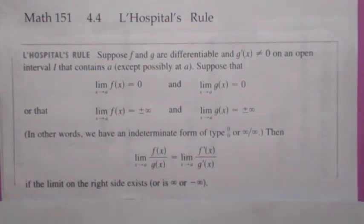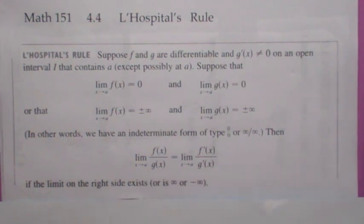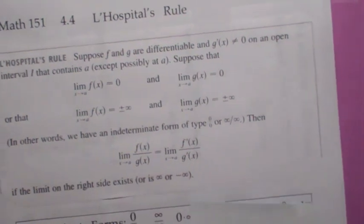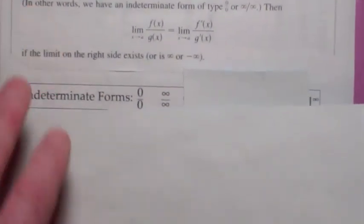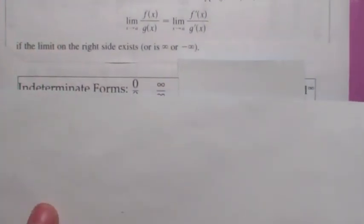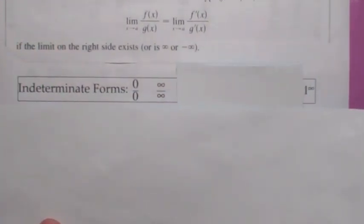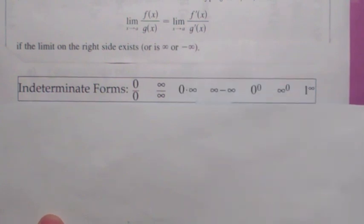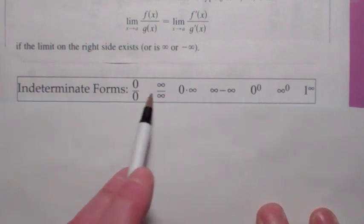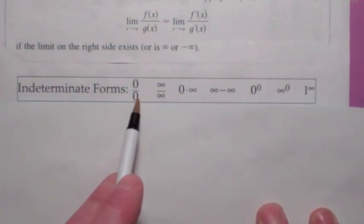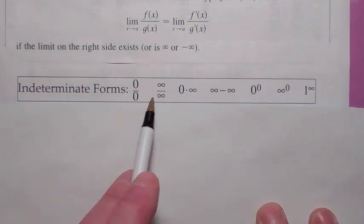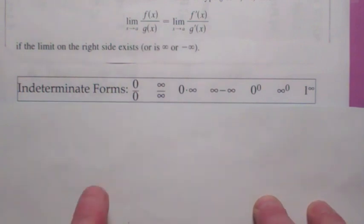This second limit might be easier to compute. So if you have either of these two forms, you can use L'Hôpital's Rule. What we're going to show later on is that if you have any of the other five indeterminate forms, you can cleverly change the form to one of these first two. But ultimately, you have to have it in either zero over zero or infinity over infinity.